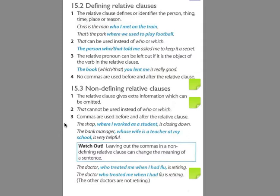So we have something like this: 'The shop, where I worked as a student, is closing down.' 'The bank manager, whose wife is a teacher at my school, is very helpful.' Basically, the sentence would be fine if we said 'The shop is closing down' or 'The bank manager is very helpful.' We already know which shop and we already know which bank manager. So we're very specific on this.